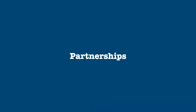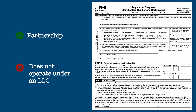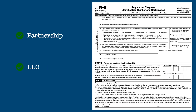Now on to partnerships. If a partnership does not operate under an LLC, enter the name of the partnership on line 1, check the partnership box, and enter the partnership's EIN in Part 1. The partnership representative listed on the last tax return the partnership filed should sign the form. If a partnership does operate under an LLC, the name of the LLC is entered on line 1, the LLC box is checked, and P is entered in the space to the right. The EIN of the partnership should be entered in Part 1, and the partnership representative signs the form, same as before.